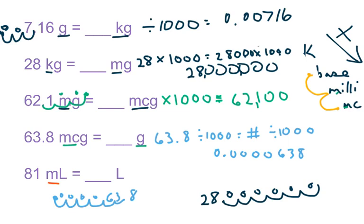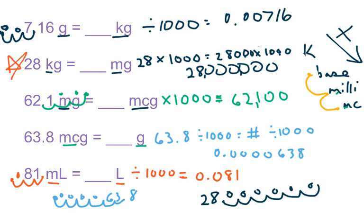Last one: I have 81 milliliters going to a liter. I'm going from milli to the base, going up one step. When I go up, I divide by 1,000. Moving the decimal three places to the left and filling in the hole with a zero gives 0.081. My apologies again for the error on 28 kilograms to milligrams — I'll put that in the comments. I hope this helped with the metric system. Talk to you all later.